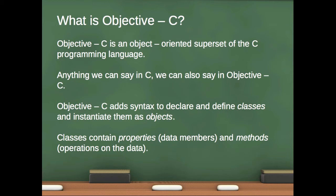As a preview, classes contain properties, which are data members, and methods, which are operations on the data inside the class. This is something like the notion of a C struct — a C struct has properties, but it doesn't have a way to add methods. In C, we can have pointers to functions, which is kind of like that idea. But object-oriented programming levels all that out so that properties and methods are both first-class citizens of a class.